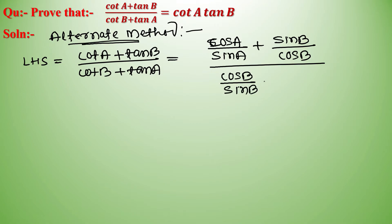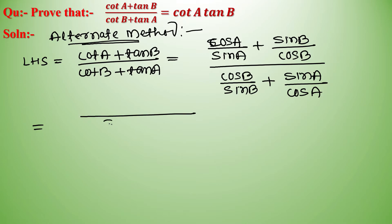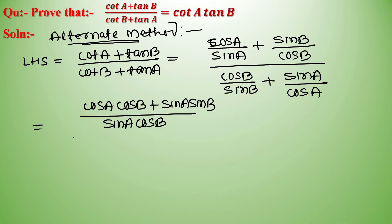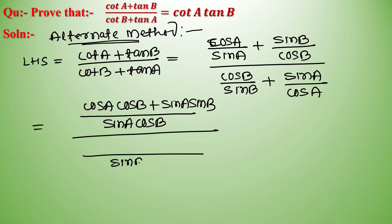Taking common denominators, the numerator becomes (cos A · cos B + sin A · sin B) / (sin A · cos B), and the denominator becomes (cos A · cos B + sin A · sin B) / (cos A · sin B).